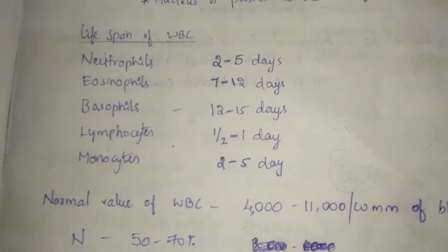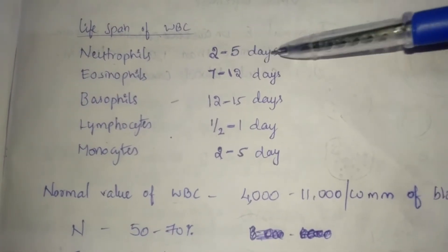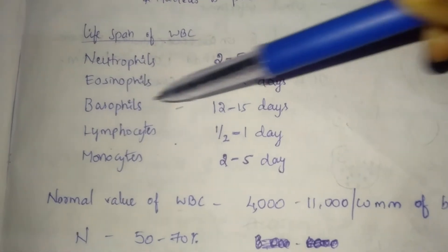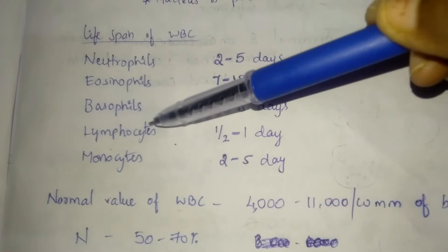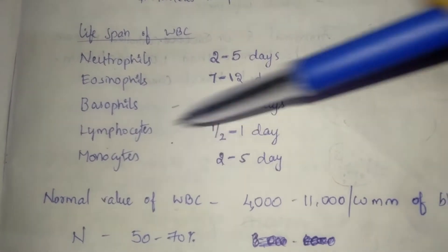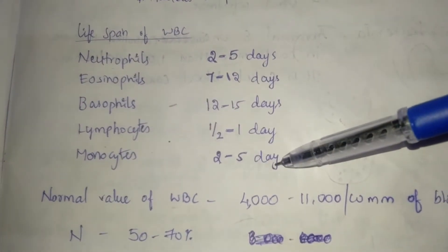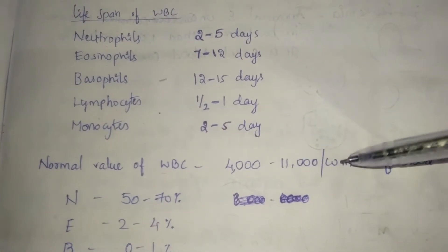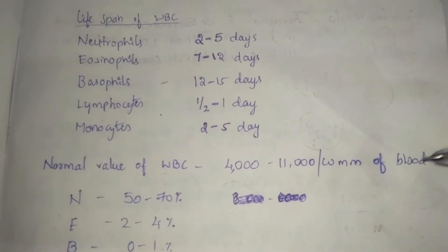Lifespan of WBC: Neutrophils only 2 to 5 days, Eosinophils 7 to 12 days, Basophils 12 to 15 days, Lymphocytes half day to 1 day, Monocytes 2 to 5 days. Normal value of WBC: 4000 to 11000 per cubic mm of blood.